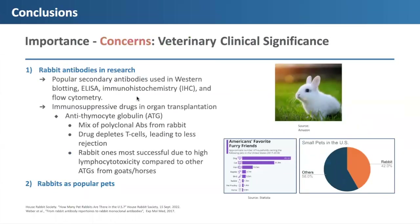However, there are also concerns about myxoma virus related to rabbit health, which are important because we rely greatly on rabbit antibodies in research, such as in Western blotting, ELISA, immunohistochemistry, and flow cytometry. We also use rabbits to harvest many immunosuppressive drugs used in organ transplantation — for example, antithymocyte globulin (ATG), a mix of polyclonal antibodies from rabbits that depletes T cells and reduces organ rejection. Rabbit ATGs are the most successful ATGs because of their high lymphocytotoxicity, compared to ATGs from goats and horses. So we want to keep rabbits healthy from myxoma virus to continue their antibody supply.